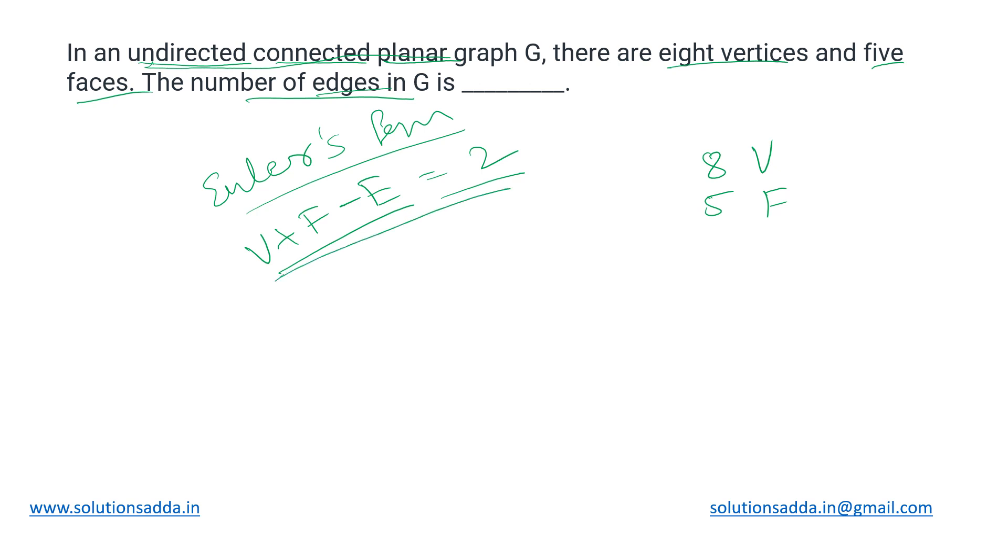Using this identity, we can substitute the values and find out the answer. How do we know whether it will hold? Because there are certain conditions: this graph has to be undirected, connected and planar. Then it would be following Euler's formula.